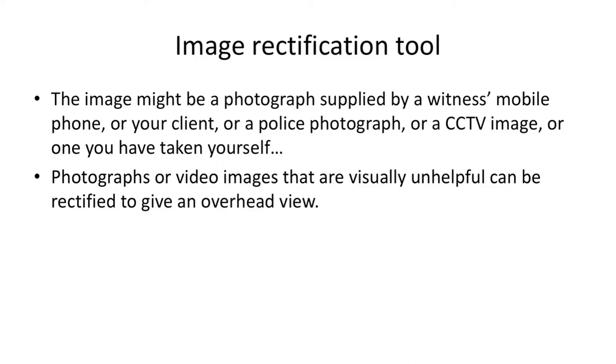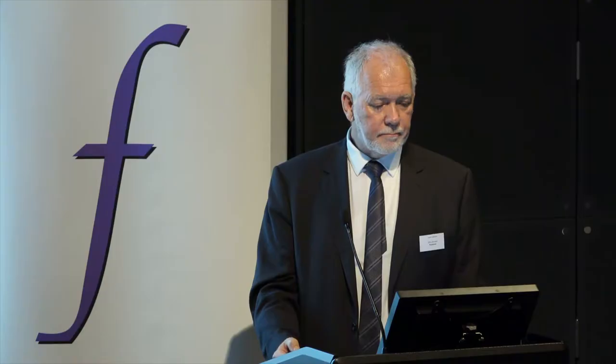The image can be a photograph supplied by a witness, for example from a mobile phone, from your client or a police photograph, an image extracted from CCTV footage or one that you might have taken yourself. Photographs and video images which are visually unhelpful can then be rectified to give an overhead view and extract information which is of some use.